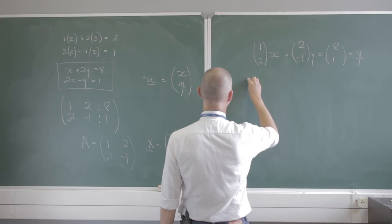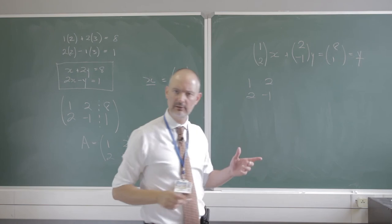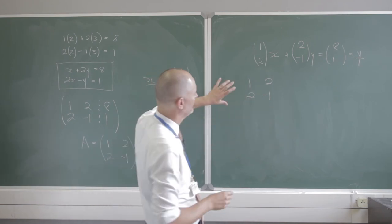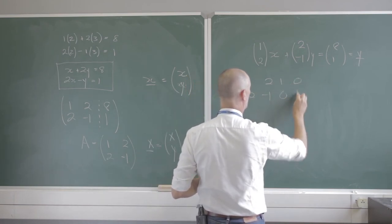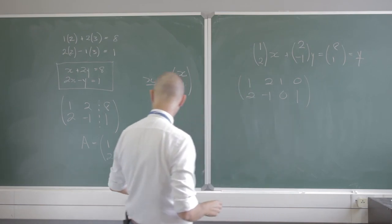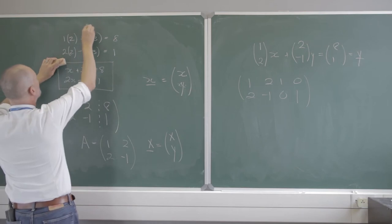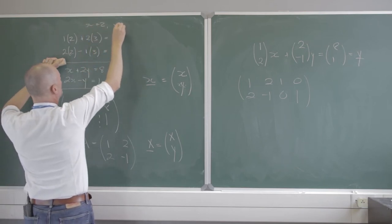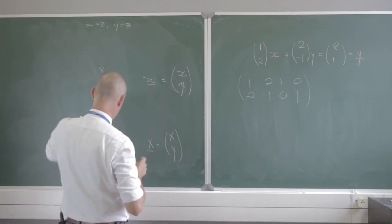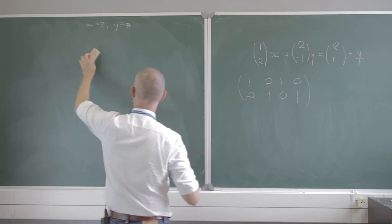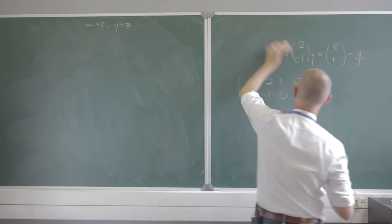The one way is to write my matrix of coefficients: 1, 2, 2 and negative 1 — a 2 by 2 matrix. I extend it to the right with a similarly-sized identity matrix: 1, 0, 0, 1. That becomes my new augmented matrix. Remember the solution is x equals 2 and y equals 3. Now I apply elementary row operations to this.